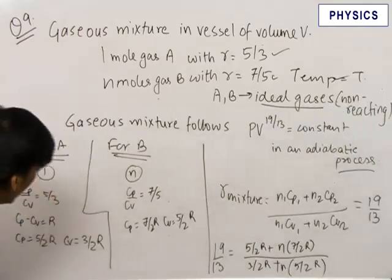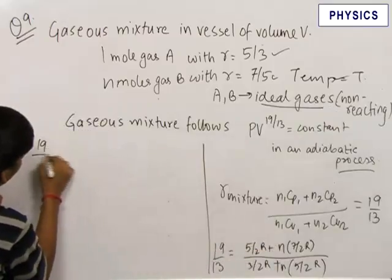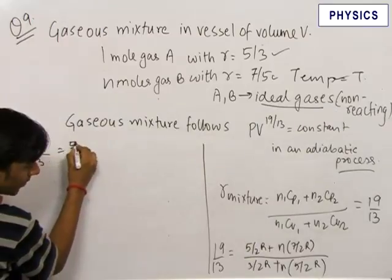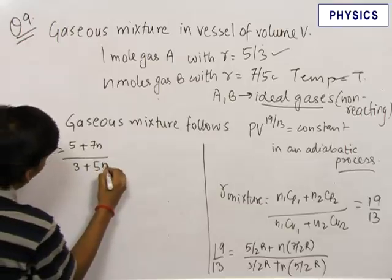On solving this equation, we can cancel R by 2 from the numerator and denominator to get 19 by 13 is equal to 5 plus 7n upon 3 plus 5n.